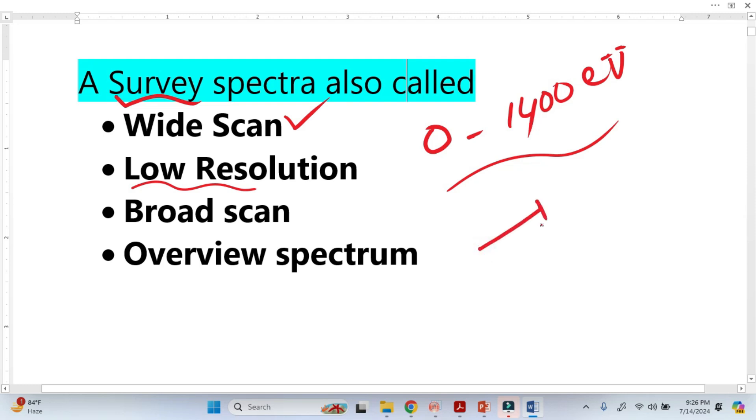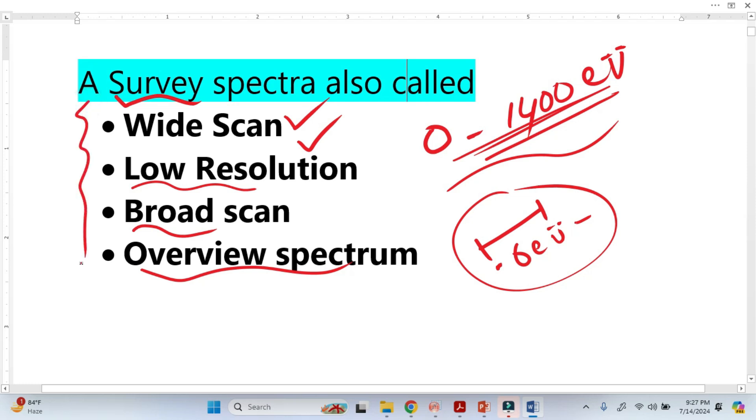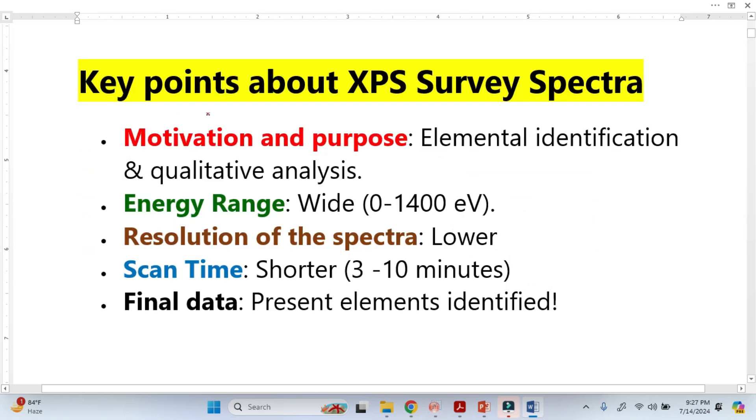It is low resolution. We are not resolving. In high resolution we just take a small range for the binding energy. For example, if we just take six electron volts when we zoom, that has high resolution. But this survey spectra is low resolution. It is also called broad scan and overview spectrum.